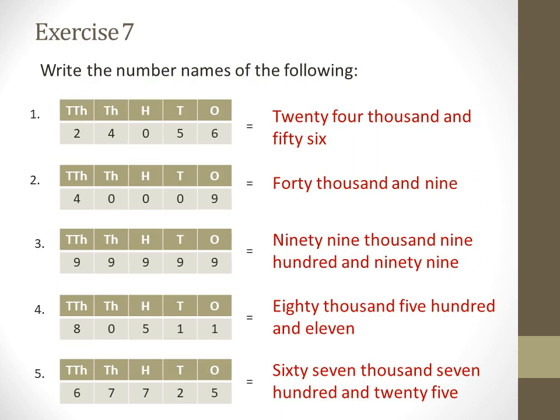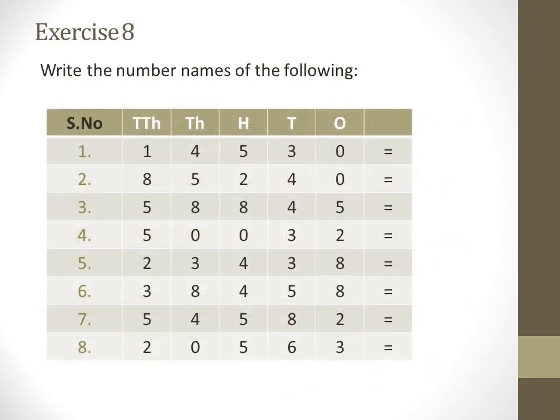I know it was very easy. Now, moving on to the homework exercise — that was the practice exercise we did in class. Now I am giving you the homework exercise. I have attached the place value chart for you to make it easy to do the answers. Refer to that place value chart and write the number names of the given numbers. I know you all can do it very nicely.